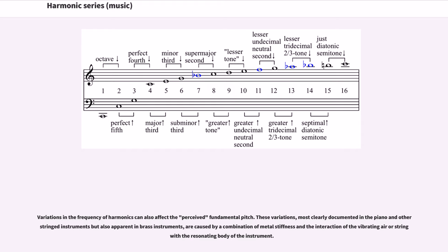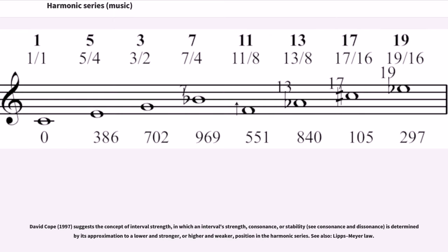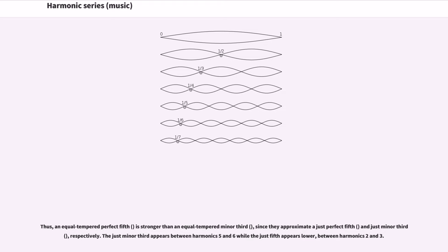Variations in the frequency of harmonics can also affect the perceived fundamental pitch. These variations, most clearly documented in the piano and other stringed instruments but also apparent in brass instruments, are caused by a combination of metal stiffness and the interaction of the vibrating air or string with the resonating body of the instrument. David Cope suggests the concept of interval strength, in which an interval's strength, consonance, or stability is determined by its approximation to a lower and stronger, or higher and weaker, position in the harmonic series. Thus an equal-tempered perfect fifth is stronger than an equal-tempered minor third, since they approximate a just perfect fifth and just minor third respectively. The just minor third appears between harmonics five and six, while the just fifth appears lower, between harmonics two and three.